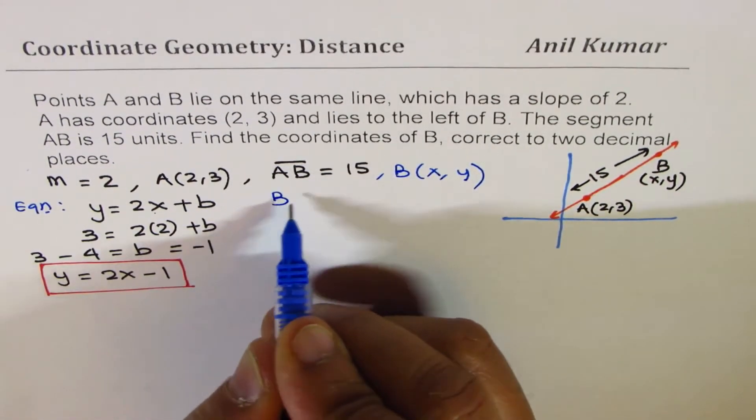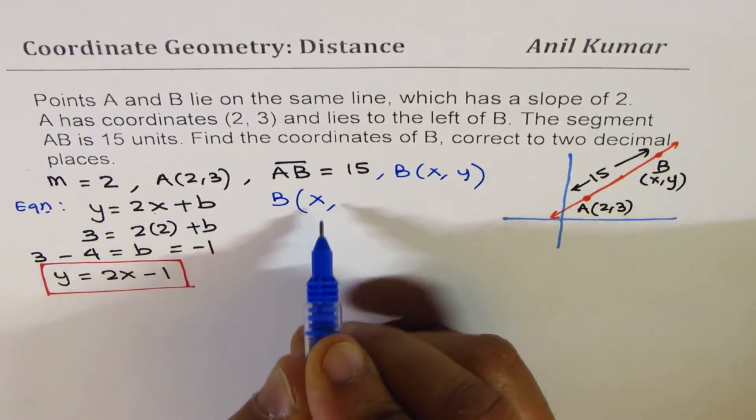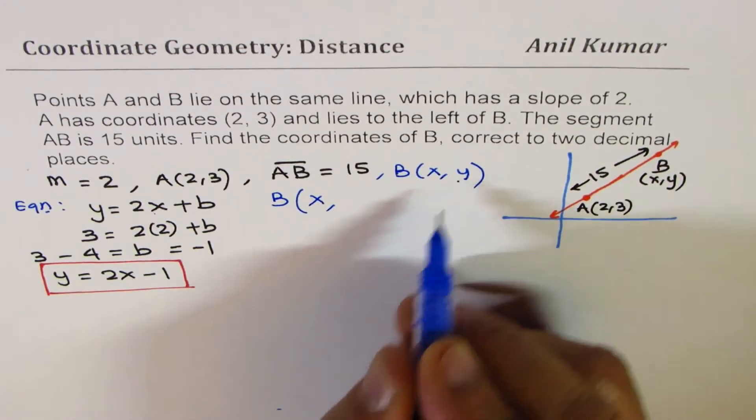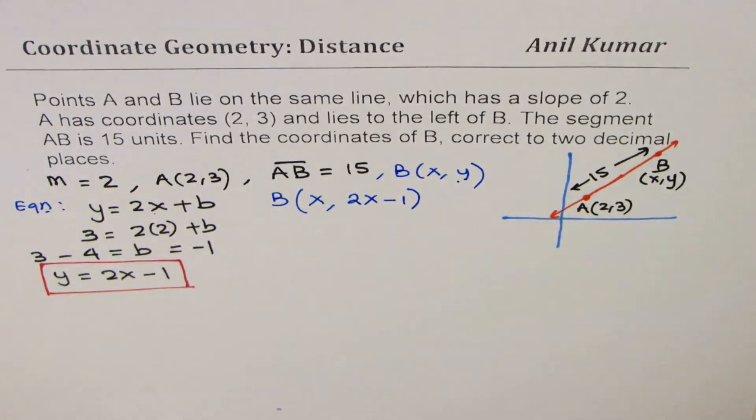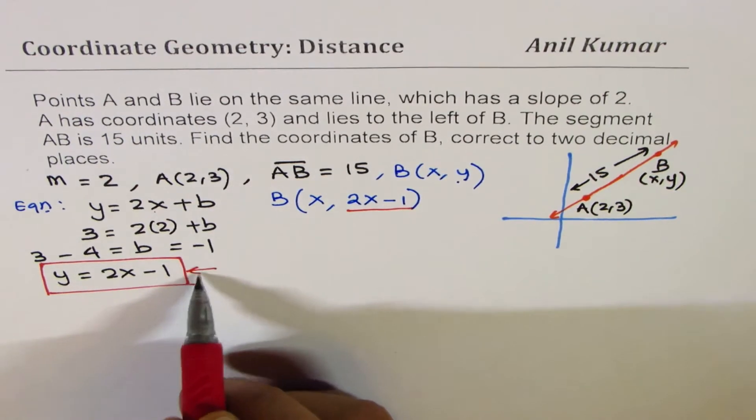Do you see that? So, now, point B is x value and instead of y, I am writing this as 2x - 1. Does it make sense? So, I replaced this y value from here. That helps.